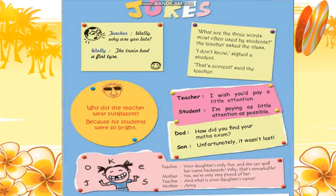Dad asked, "How did you find your maths exam?" Son said, "Unfortunately, it wasn't lost." Teacher said, "Your daughter is only five and she can spell her name backward. That's remarkable." Mother said, "Yes, we are very proud of her." Teacher asked, "And what is your daughter's name?" Mother said, "Anna."